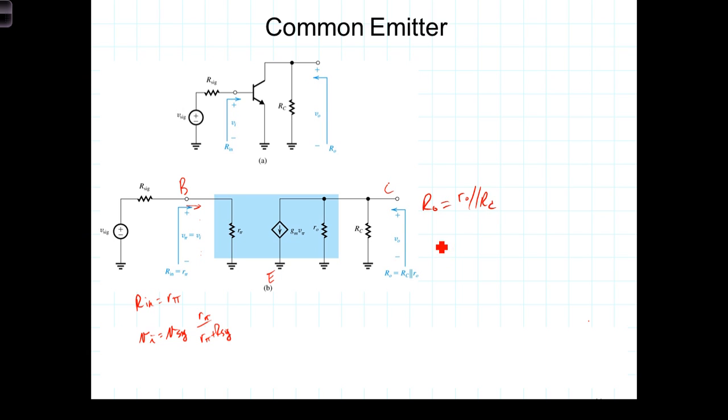And we can calculate the open circuit voltage gain A sub V zero, which is equal to V out over V in with no load resistance connected. So we see here then that V out is equal to negative G sub M times V pi, but V pi is just V in,